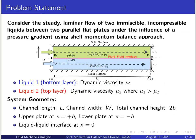Now here is the problem statement. Consider the steady laminar flow of two immiscible incompressible liquids between two parallel flat plates under the influence of a pressure gradient, using the shell momentum balance approach. There is one top plate and one bottom plate, with two immiscible fluids in between. Liquid one is the bottom layer and liquid two is the top layer. The bottom layer has dynamic viscosity mu one and density rho one; the top liquid has mu two, where mu one is greater than mu two. The system geometry: channel length is L, channel width is W, and total channel height is 2B.